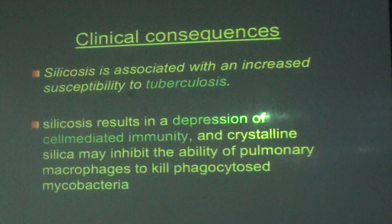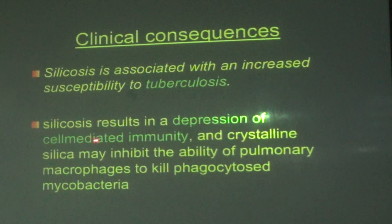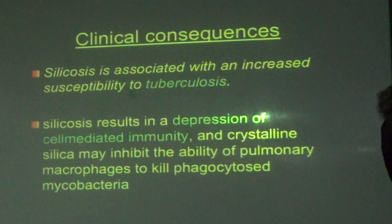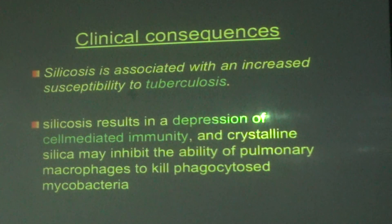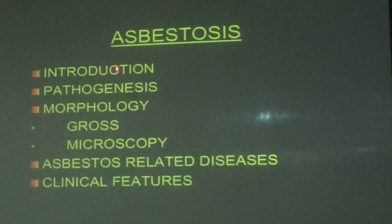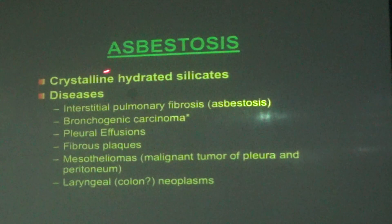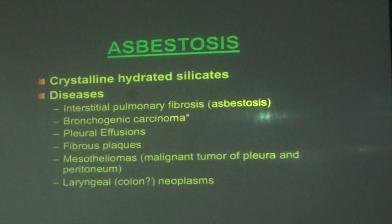Clinically, silicosis is associated with increased susceptibility to tuberculosis because crystalline silica inhibits the ability of pulmonary macrophages to kill phagocytosed mycobacteria, causing depression of cell-mediated immunity. These slides are taken from Robbins basic pathology to ensure all key points are covered.